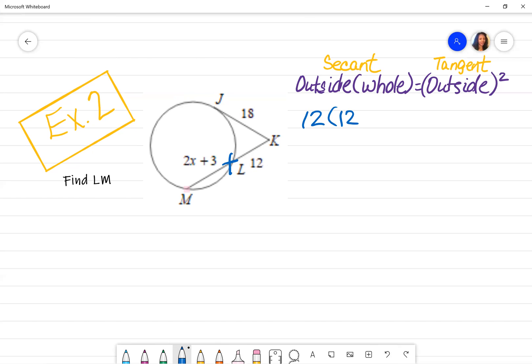And then I'm going to add it to that 2X plus 3. And then on the other side is asking for the outside of my tangent, which the formula tells me that I'm going to square it. So I'm going to take 18 and I'm going to square it. It does not hurt to just go ahead and write down your formula because that will help you. Let me put the X first. I want to go ahead and put it in standard form. So I'm going to do the 2X and then I'm going to add the 12 plus 3 since they're like terms, which is 15, and 18 squared is 324.